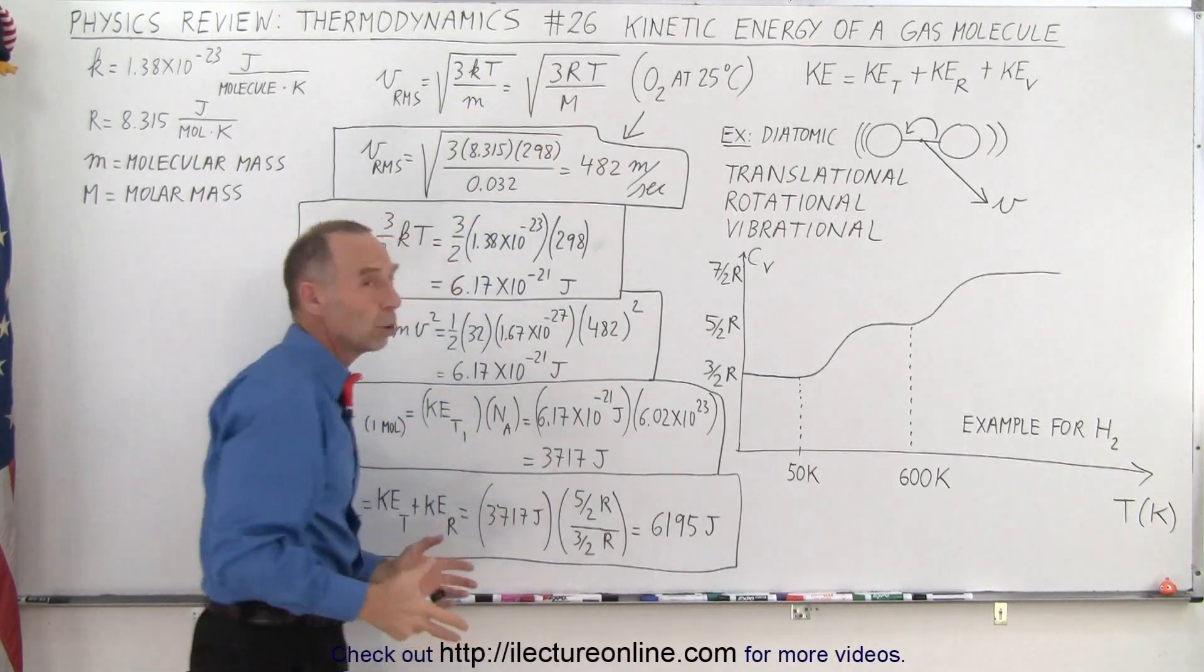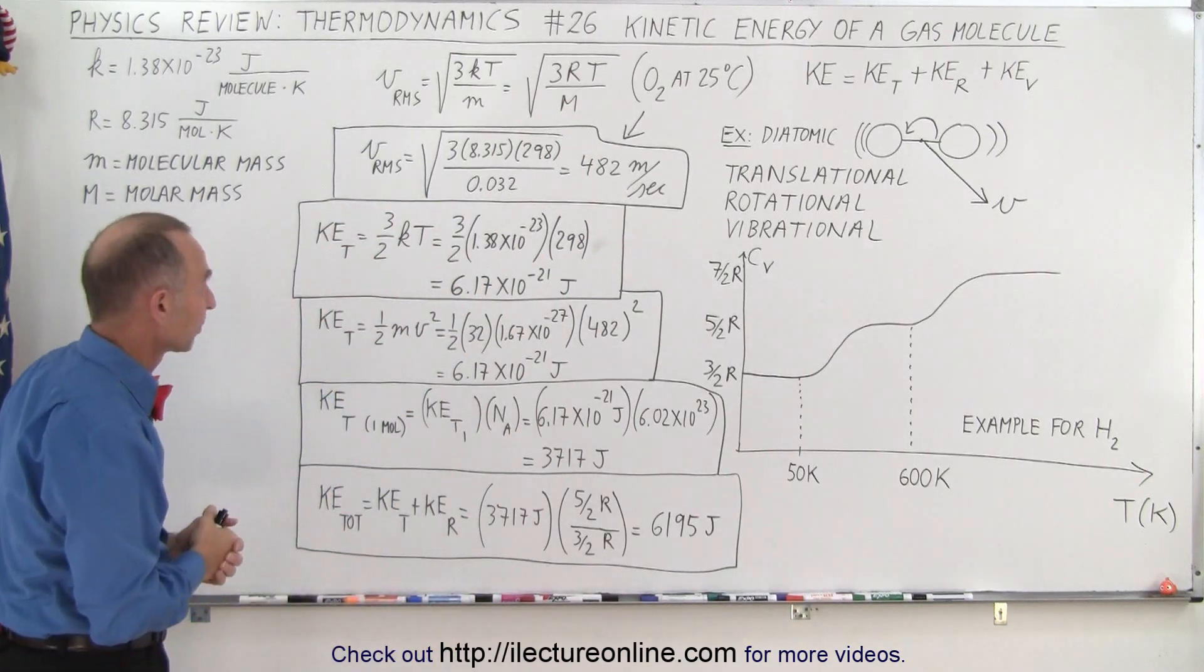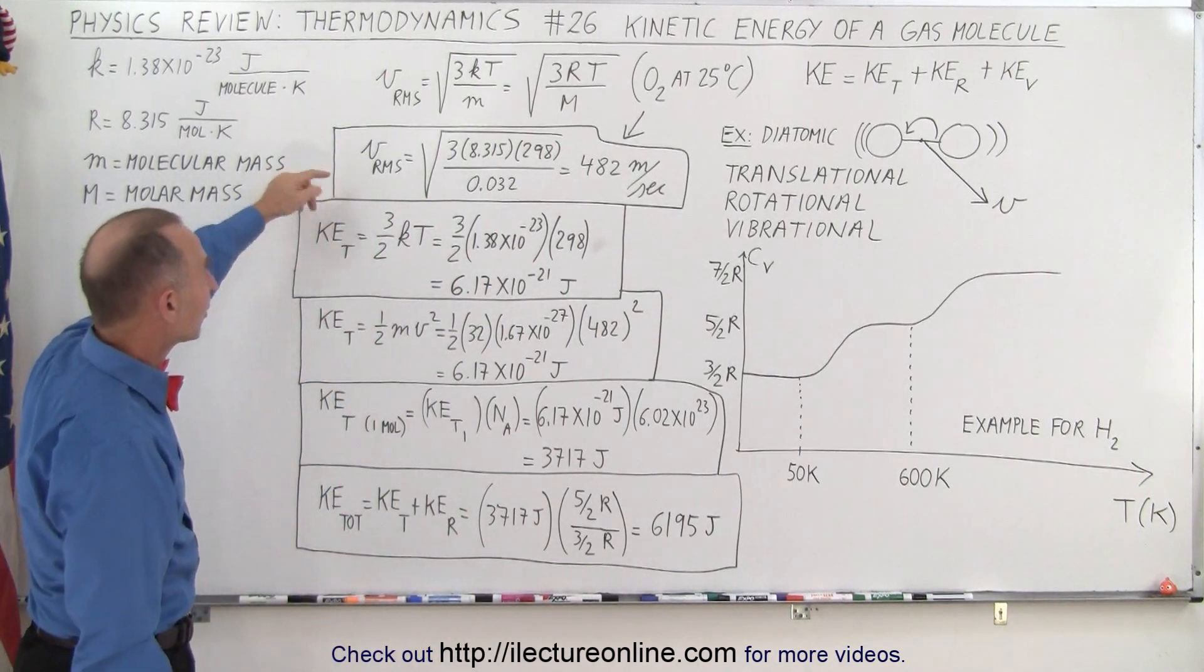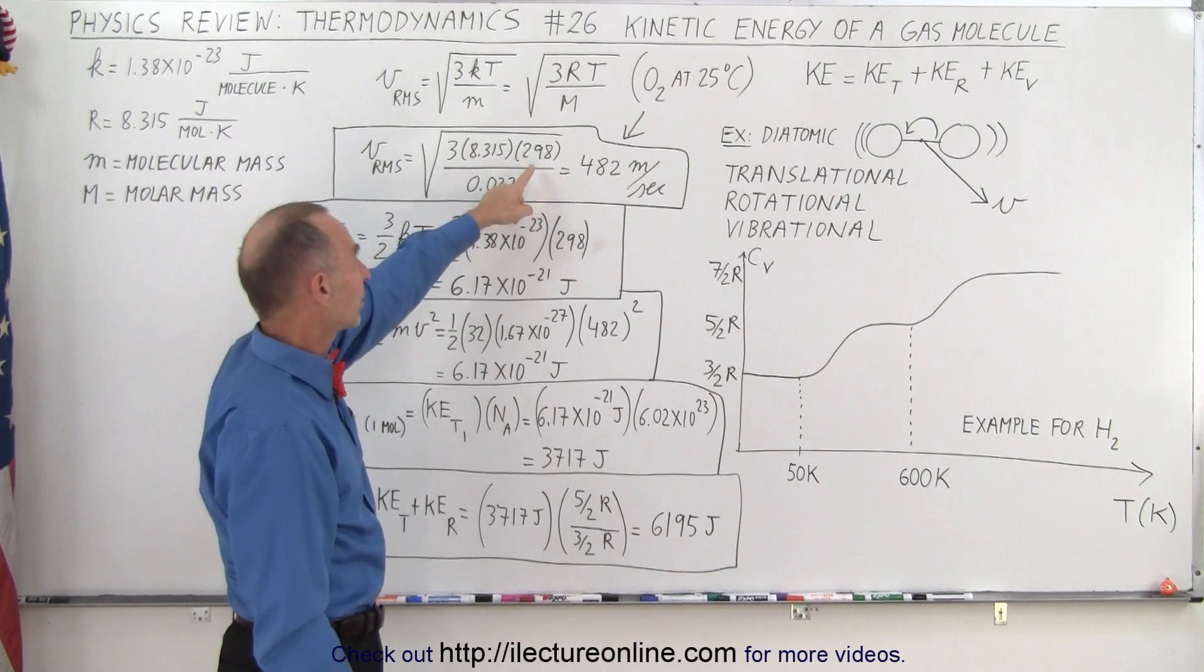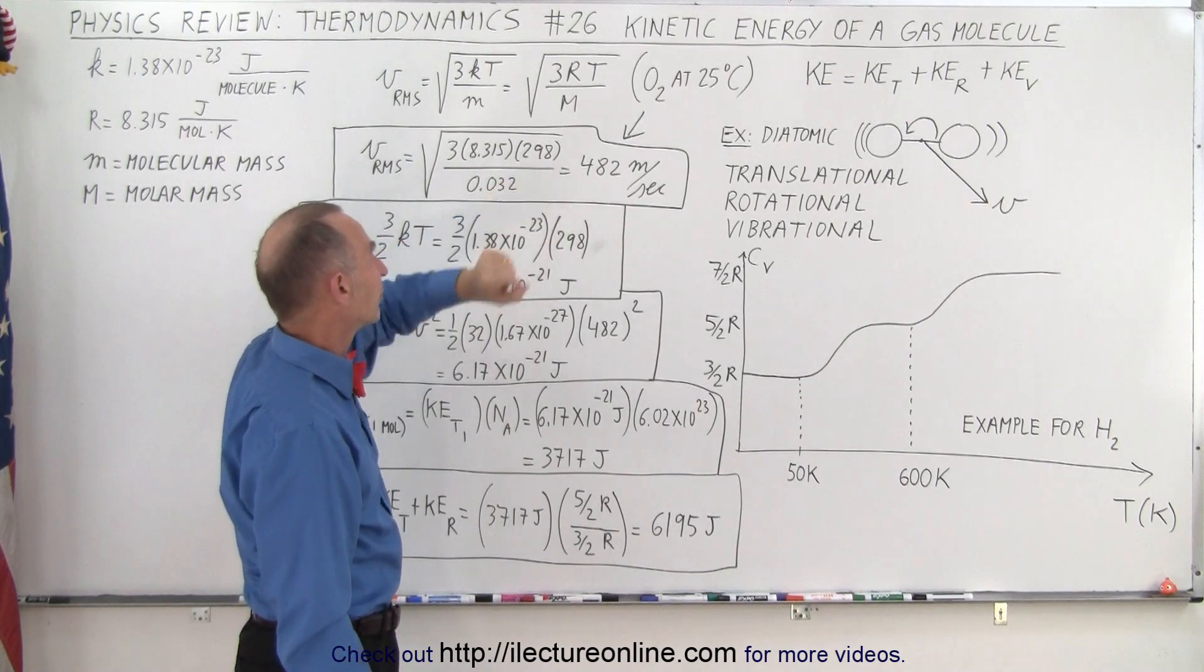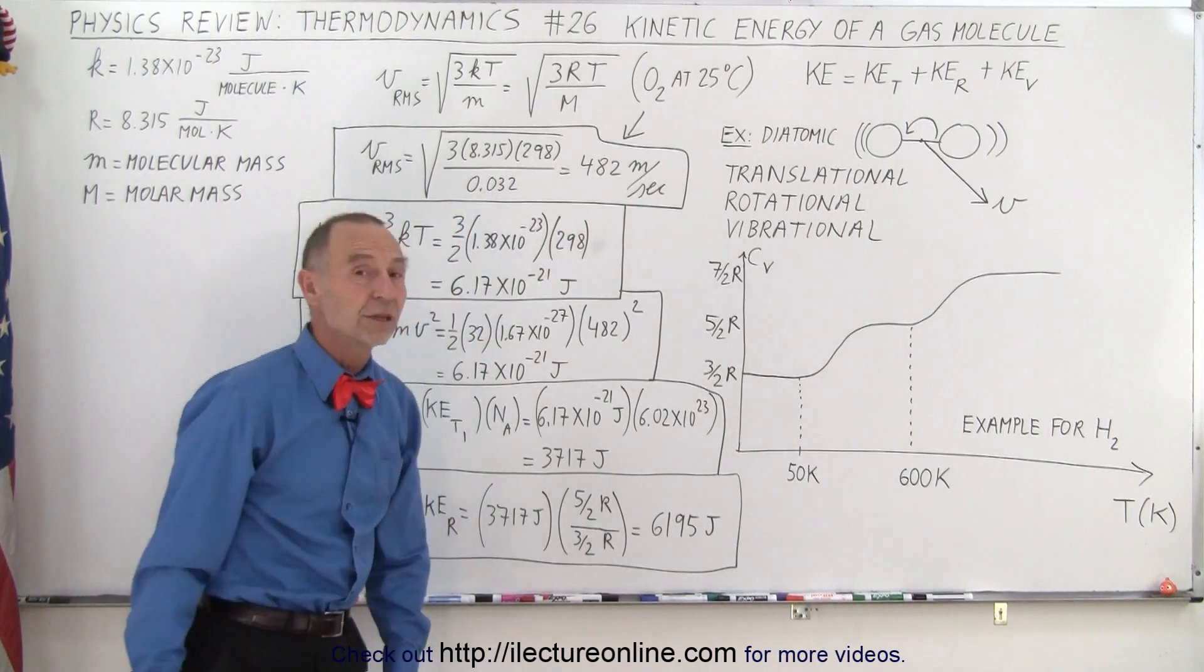M means the mass of a mole of molecules, the molecular mass. So we can calculate the RMS velocity for oxygen, diatomic oxygen at 298 Kelvin and that would be 482 meters per second.